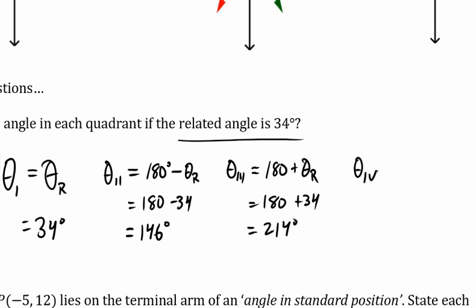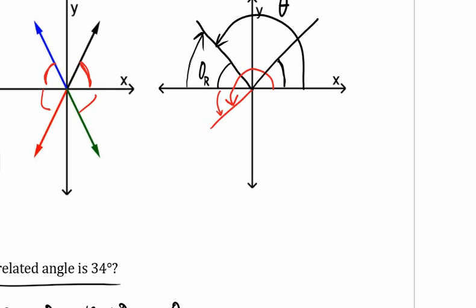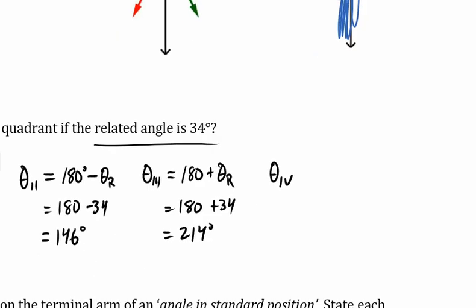For the last one — quadrant four — the formula is 360 minus theta-related. We never use 270; it's always 180 and 360. You need to know those key arm positions: 0, 90, 180, 270, 360, so you know which quadrant you're in. So theta four equals 360° minus 34° which equals 326°.